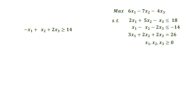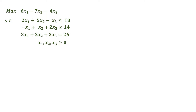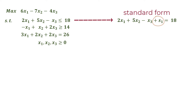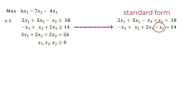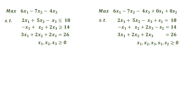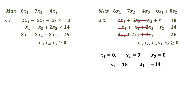Writing it in standard form, we introduce a slack variable to the first constraint because it's a less-than-or-equal constraint. We introduce a surplus variable to the second constraint since it's a greater-or-equal constraint. The third constraint does not need a slack or surplus because it already has equality. Based on this model, if we make x1, x2, and x3 non-basic by setting them to zero, we get s1 equals 18 and s2 equals negative 14, which poses two problems.